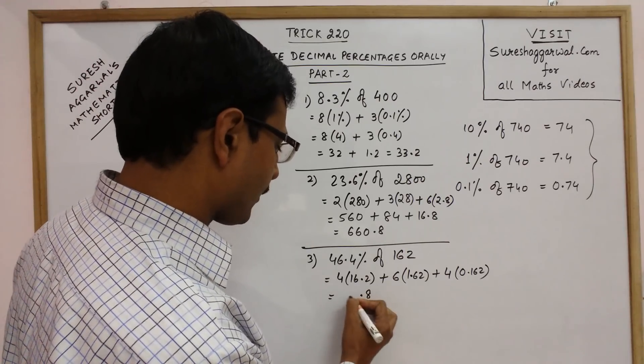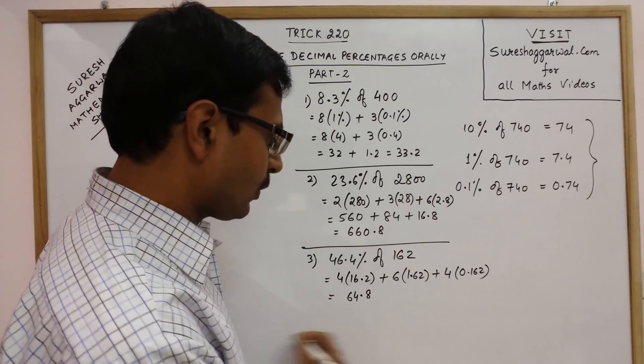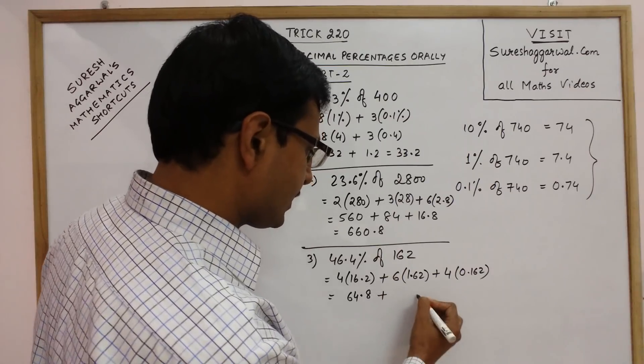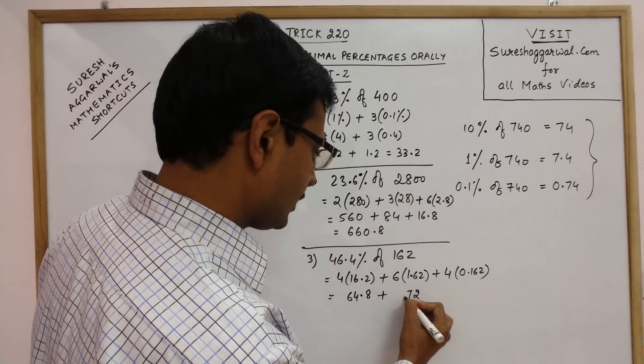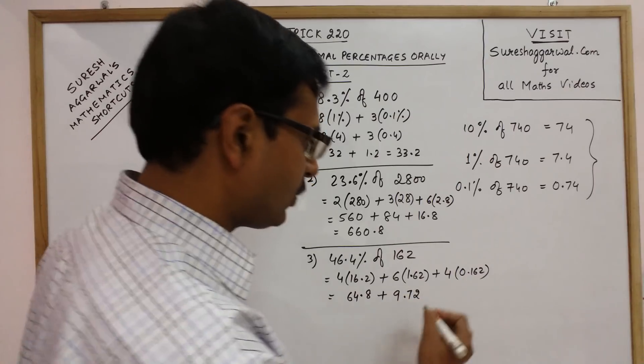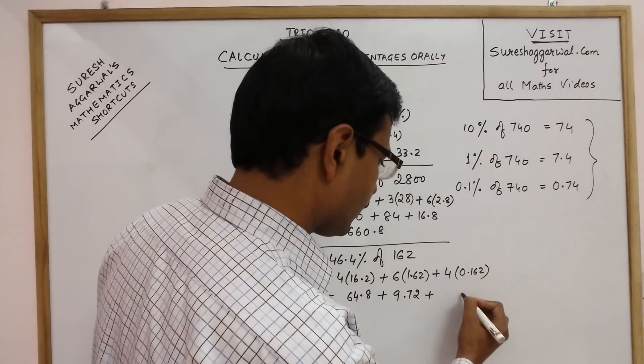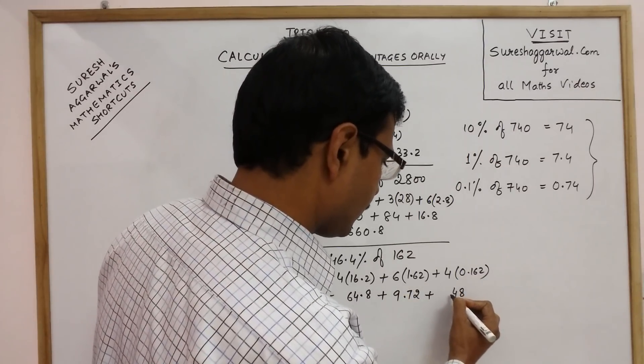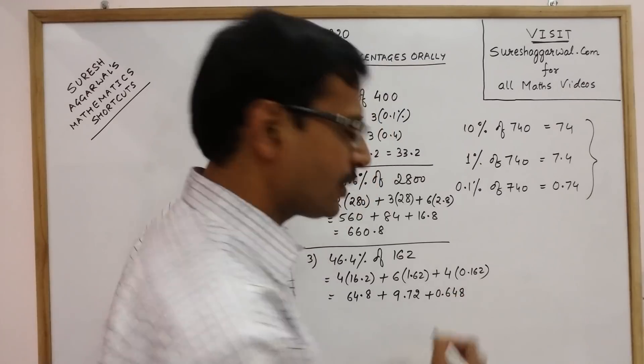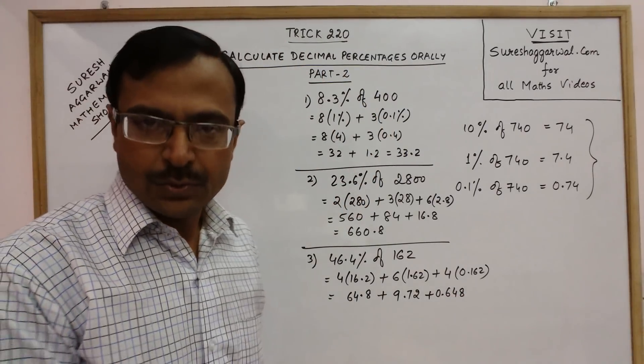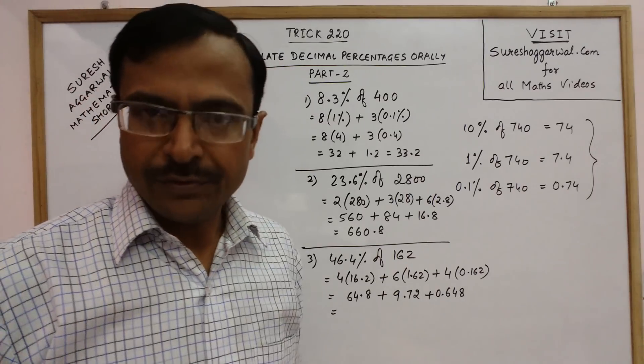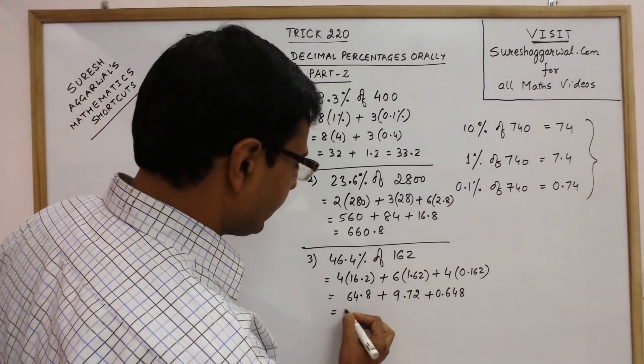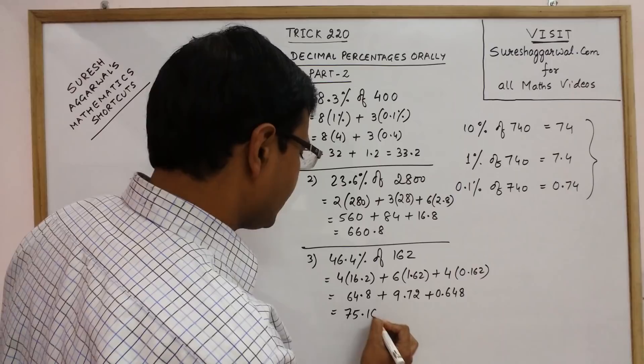64.8 plus 9.72 plus 0.648. Now once you total these 3 ups, then you get your final answer. It is 75.168.